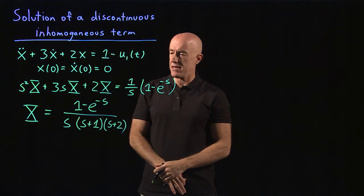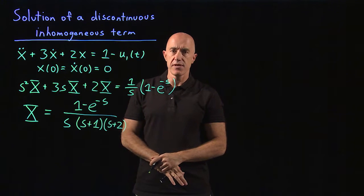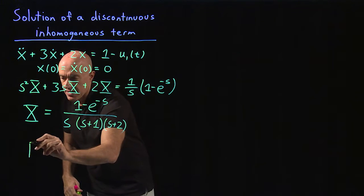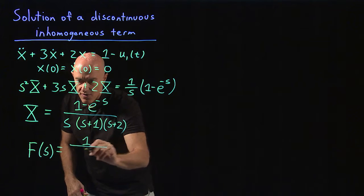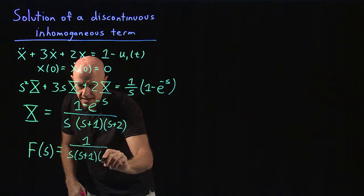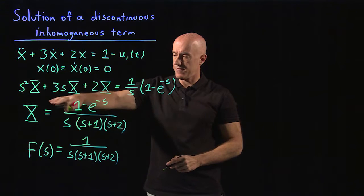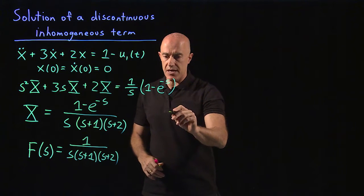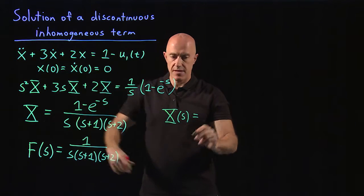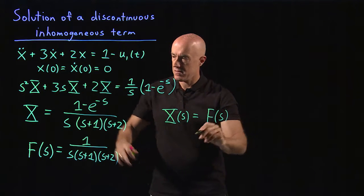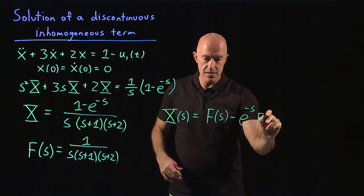This looks like a somewhat complicated expression, but we can make it easier to understand by defining a function F. Let's define capital F of s to be 1 over s times s plus 1 times s plus 2. Then X of s becomes F of s minus e to the minus s times F of s.